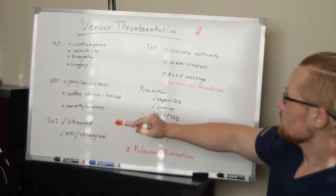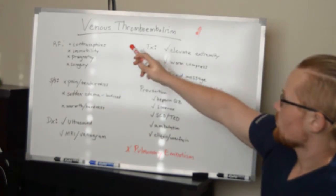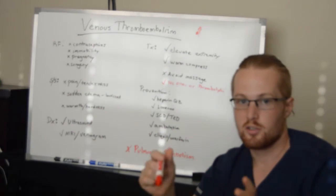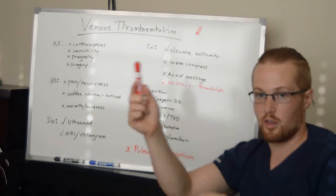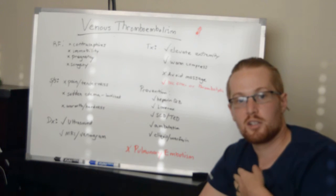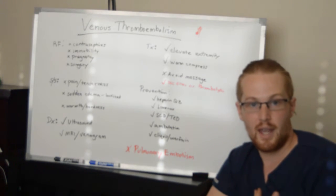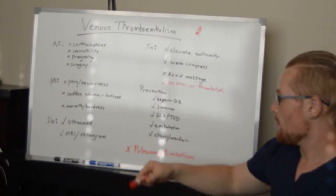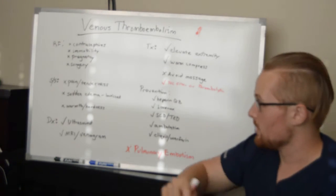So once you find out a patient has a venous thromboembolism, you don't want this to turn into a pulmonary embolism, which is where the thrombus moves and goes and gets stuck in the lungs. When that happens, that is a big emergency. So let's talk about treatment.